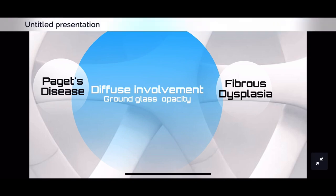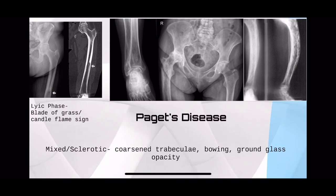For Paget's disease, you see coarsened trabeculae with bowing in the tibia, and a ground-glass appearance. Paget's disease is seen in three phases. In the early lytic phase, you can see just a candle flame sign — also called blade of grass sign — but in advanced mixed or sclerotic stages, you see ground-glass opacities.